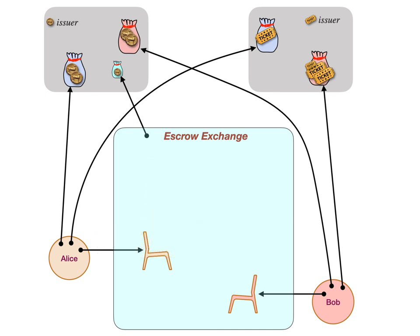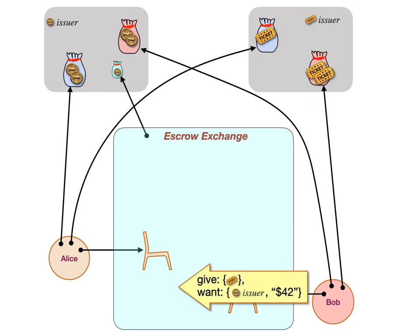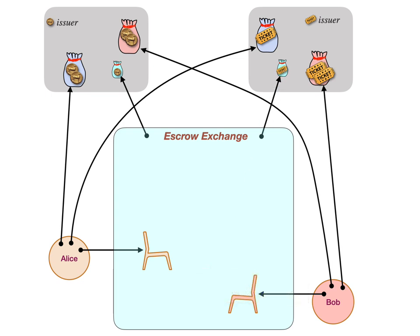The escrow exchange proceeds to use a 'make empty purse' message on the issuer to create a credible empty purse that neither Alice nor Bob have access to — only the escrow exchange has access to it — and to use that to escrow the asset. Likewise, Bob escrowing the ticket, saying what he wants in exchange, and the escrow exchange escrowing that. Now that the escrow exchange has both assets escrowed, only at this point can it safely release Bob's ticket to Alice and release Alice's money to Bob.